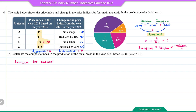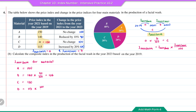For material A: no change, so the price index in 2023 based on 2019 remains 150. For material B: 140 times 90 over 100 equals 126. For material C: no change, so the price index remains 130. For material D: 115 times 120 over 100 equals 138.